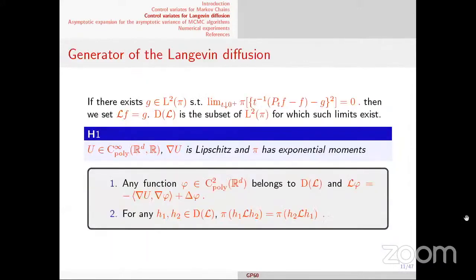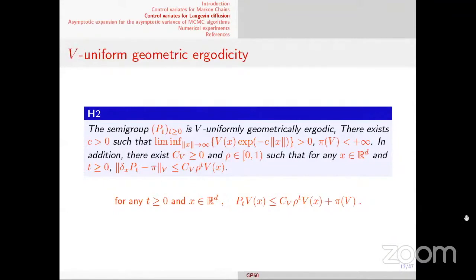If additionally the semi-group P_t is v-uniformly geometrically ergodic — meaning delta_x P_t - pi converges in v-norm as c·v(x)·rho^t — then this holds under well-known conditions linked to the behavior of the potential, studied in particular by Roberts in the early 90s. Under v-norm contraction, you can also find Poisson solutions, defined as integrals of P_t(f_tilde), and the Poisson equation is unique up to an additive constant.